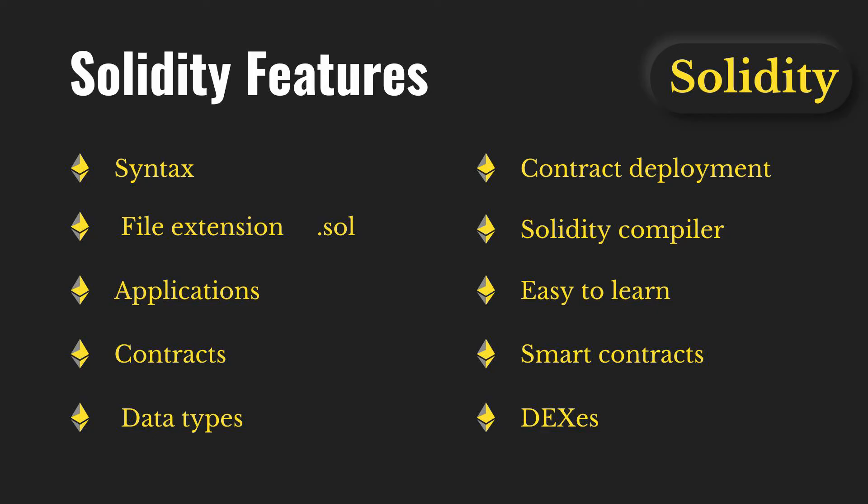Solidity is fairly easy to learn. If you stay focused for three months, you can become proficient because the language is influenced by existing languages. If you have some knowledge of JavaScript, Python, or C++, you can learn Solidity very quickly. Before starting, focus on JavaScript at minimum. In the real world, most exchanges have their own tokens — ERC-20, ERC-721, ERC-1155 — and you can create your own token contract that gets regulated and can generate revenue.